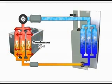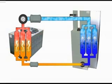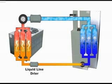This brings us to the liquid line dryer — another type of filter. Even though this dryer performs the same function as the suction line dryer, the liquid line dryer removes moisture and contaminants from refrigerant that is in liquid form, therefore requiring a different type of filter.